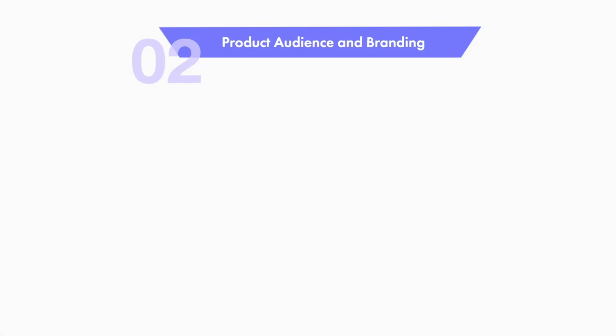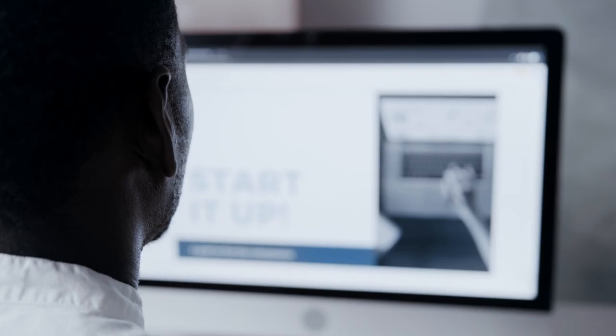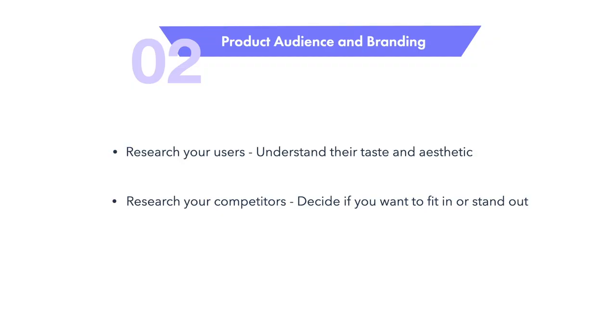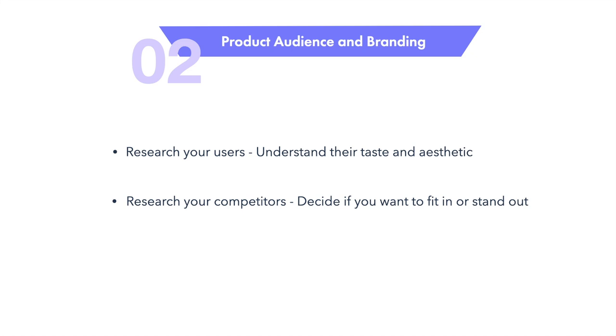The next step of the funnel is product branding and audience. This part starts with research. If you haven't already done so in your UX process, it's important to understand the tastes and aesthetics that are most appealing to the users or customers interacting with your website or user interfaces. It's also a good idea to take a look at the fonts your competitors are using. Do you want to establish yourself as a clear part of a certain industry, or do you want to stand out and shake things up? Knowing what your users will resonate with, along with the unique differentiators you want to highlight, is the first step to aligning your product, audience, and brand through your font choice.